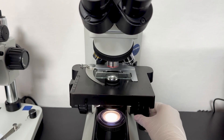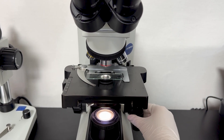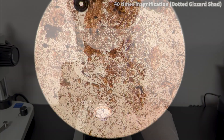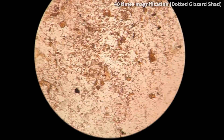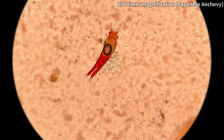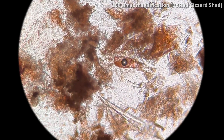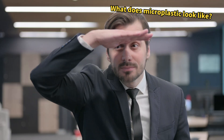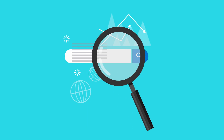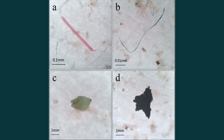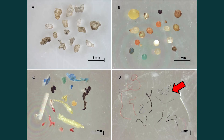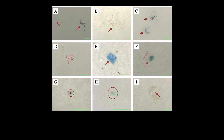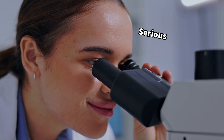Now let's examine the contents of the stomachs of both the anchovy and the dotted gizzard shad under a microscope. Upon closer inspection, we can see a variety of substances. Besides reddish zooplankton, there are carcasses of various small creatures. We also found numerous characteristic items. To identify microplastics among these, we consulted research materials and learned that microplastics can appear as strings, balls, and vinyl, along with small plastic pieces.